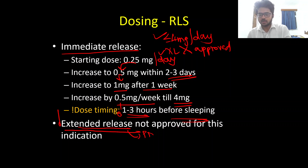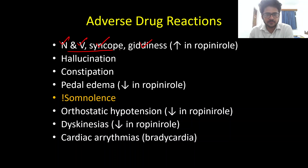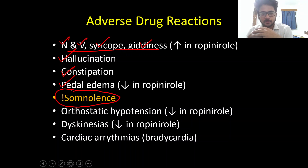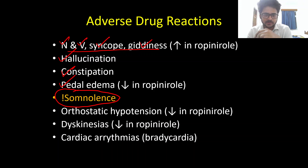Now, the adverse drug reactions — these are true not only for ropinirole but for all dopamine agonists like pramipexole and ergot alkaloids as well. The most important are nausea and vomiting, syncope, and giddiness due to dopamine receptor action. Neuropsychiatric complications like hallucinations and cognitive decline with chronic use, constipation, and pedal edema are also important. Somnolence is notable — dopamine agonists including ropinirole and pramipexole can cause sudden sleep attacks, and patients, especially heavy vehicle drivers, must be warned not to drive if sleep-deprived.